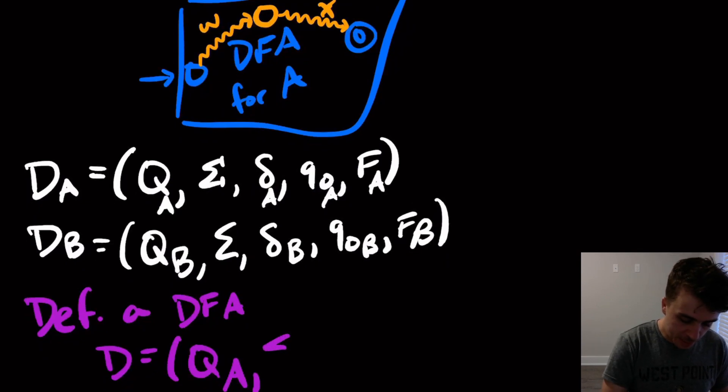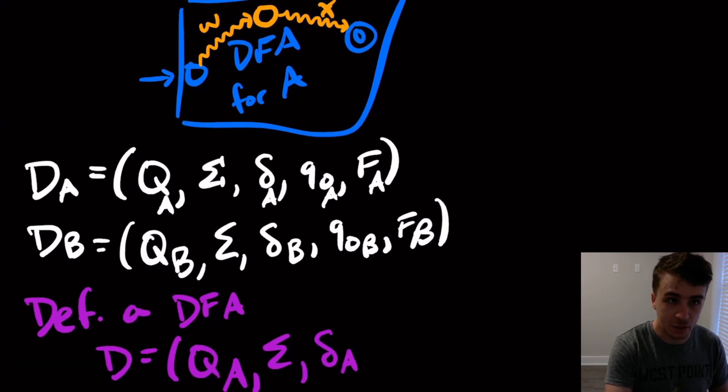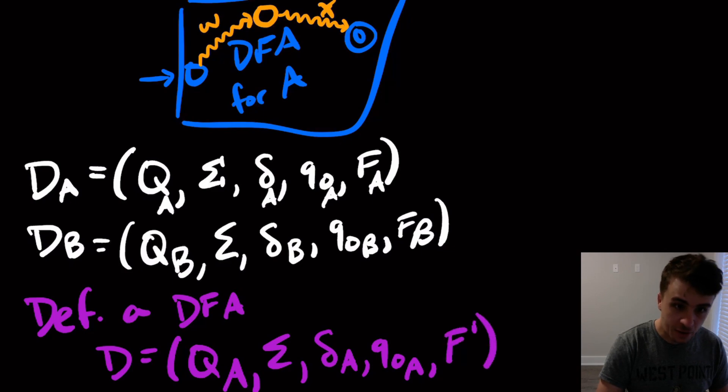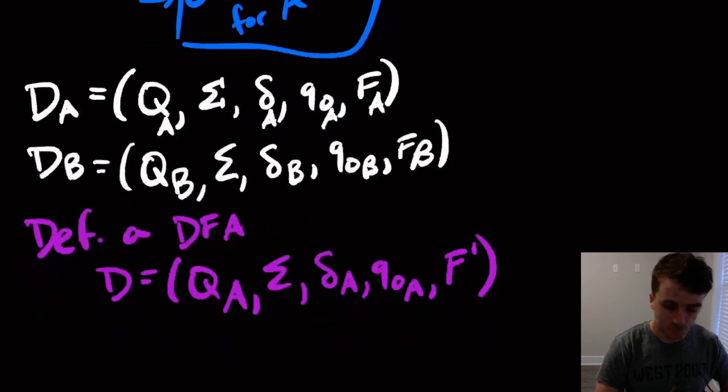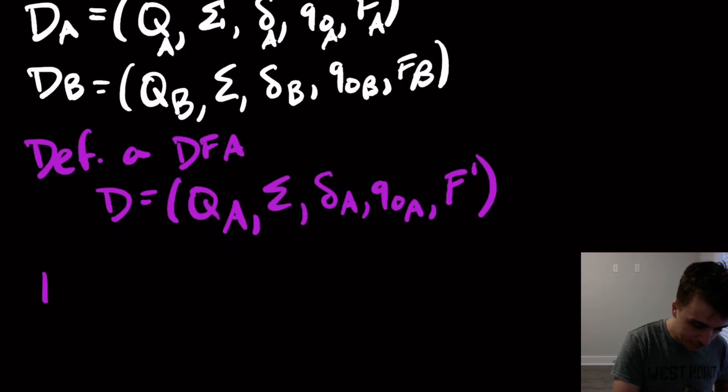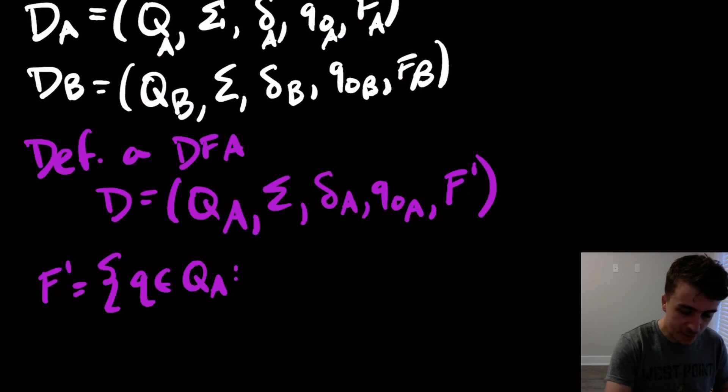So the alphabet is of course the same. The transition function is going to be exactly the same because I don't modify any of the transitions themselves. All I do is I modify the final states. The start state is going to be the same and then the final states are going to of course be different. So what are the final states going to be here? Well, it's going to be all of the states in that DFA, because remember all of the final states are just states.